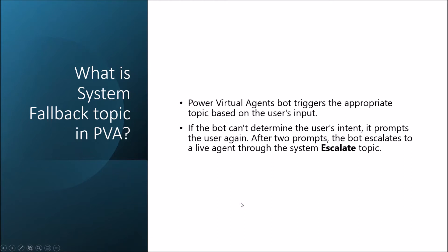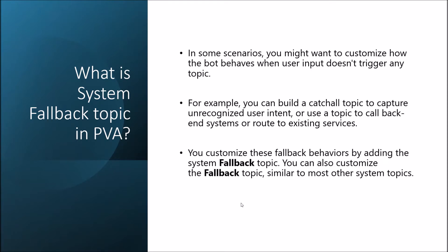Power Virtual Agent's bot triggers the appropriate topic based on user input. If the bot can't determine the user intent, it prompts the user again. After two prompts the bot escalates to a live agent through the system escalate topic. In some scenarios you might want to customize how the bot behaves when the user input doesn't trigger any topic — for example, for our HR chatbot, if we enter a question and the bot doesn't recognize the intent, it will call the system fallback topic. System fallback can be easily customized and integrated with any third-party services.